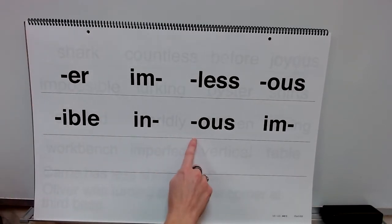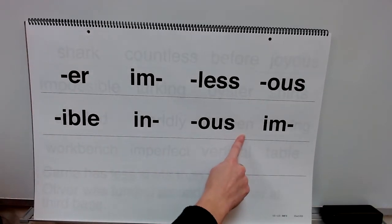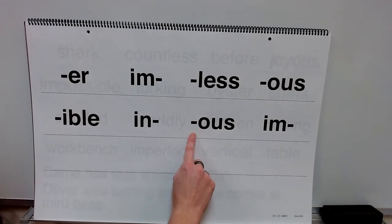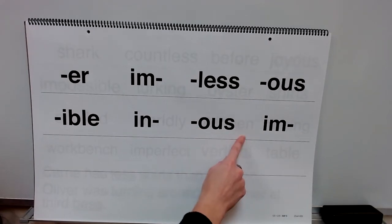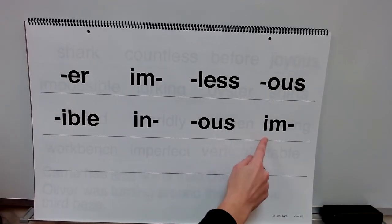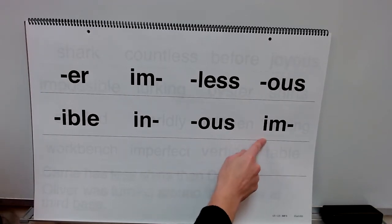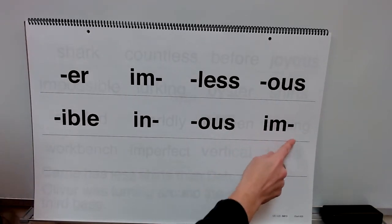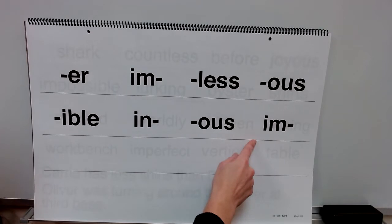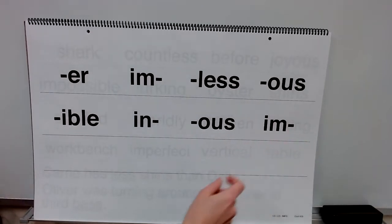Suffix: ous. Meaning: full of. Prefix: im. Meaning: not.